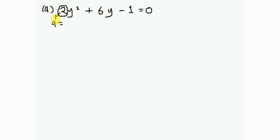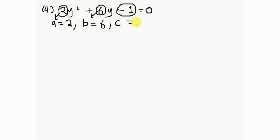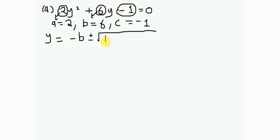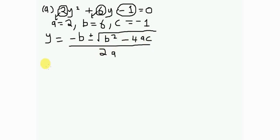I'll identify a, b, and c. The value of a is 2, which is the coefficient of y squared. The value of b is 6, which is the coefficient of y. The value of c is negative 1, which is the constant. The quadratic formula is: y equals negative b plus or minus the square root of b squared minus 4ac, divided by 2a.